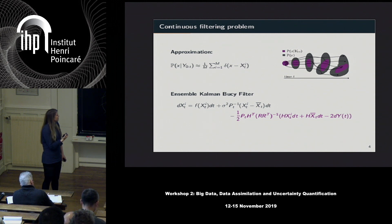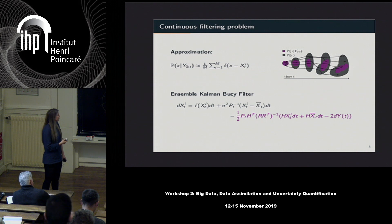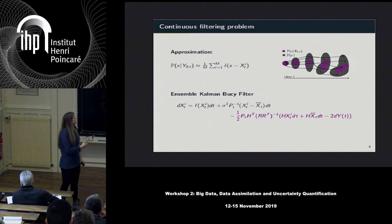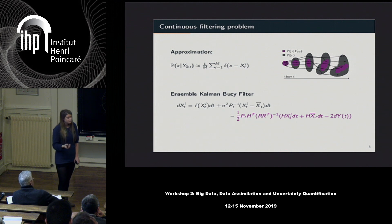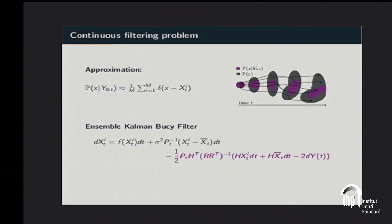In the continuous setting, assuming a Gaussian distribution, one can derive a variant of the ensemble Kalman-Bucy filter. There are other variants, but the one I'm discussing today relates to the deterministic formulation of the EnKF — specifically the ensemble square root filter. You can also have variants with additional stochastic noise in the innovation term, relating to the stochastic EnKF, but today I focus on this deterministic variant and show accuracy results we were able to derive.